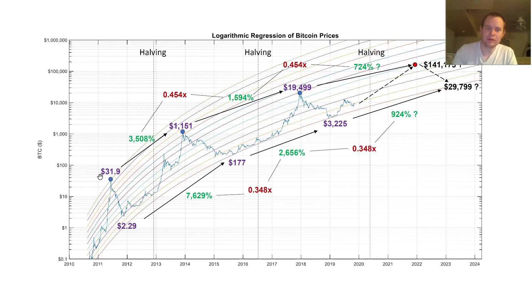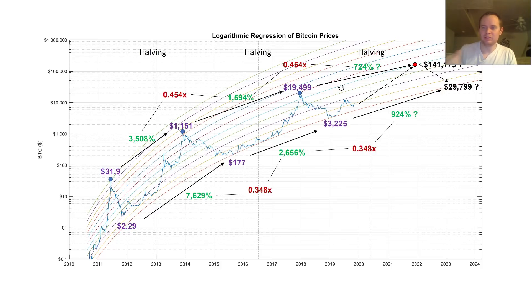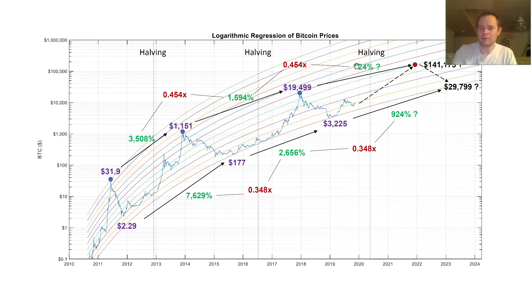If you go back to Bitcoin, each successive bull run does not make it as high up on each curve, which ultimately would mean that we're converging to a value. So you can imagine if you were to extend this another two or three cycles, Bitcoin would start converging to more of a stable value and not seeing these massive run-ups. You can see that from peak to peak the percentage gains are getting smaller and smaller. So it's possible that if it's about 0.45 a couple more times, then from peak to peak the change might only be like 150% or something.